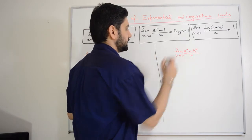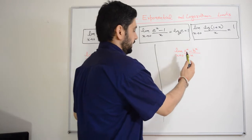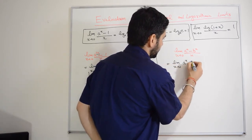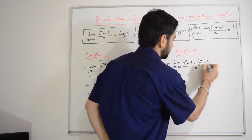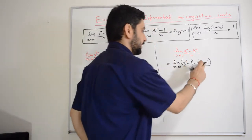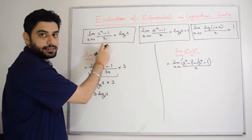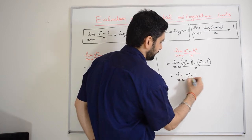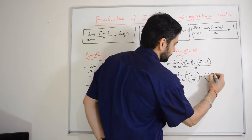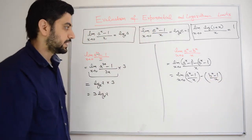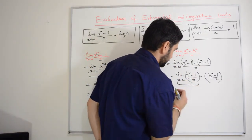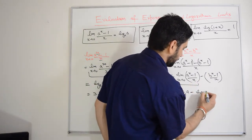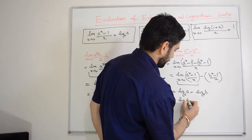Next example: limit x tends to 0, a^x minus b^x, divided by x. We can write this as limit x tends to 0, (a^x minus 1) minus (b^x minus 1), all divided by x. Separating x in the denominator gives limit x tends to 0, (a^x minus 1)/x minus (b^x minus 1)/x. Both are standard forms, giving log_e(a) minus log_e(b), which equals log(a/b).